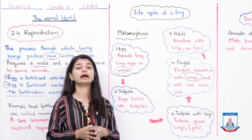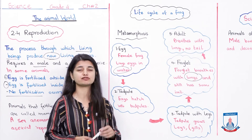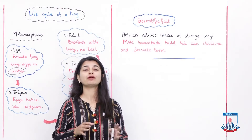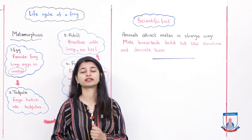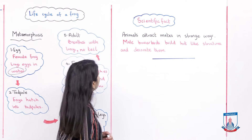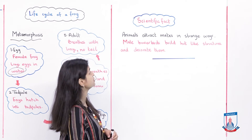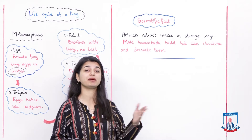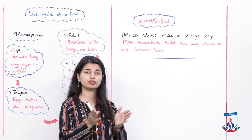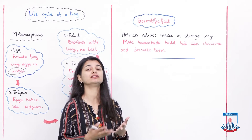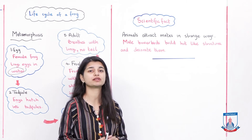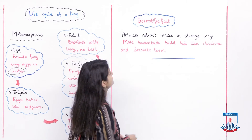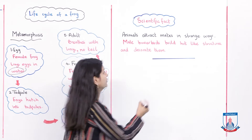Before winding up, we have a little interesting fact from your book. Animals attract mates in strange ways. We have said that there is a male species and a female species, and they attract their partner in different ways. Here is one example: male bowerbirds build hut-like structures and decorate them to attract a female mate.